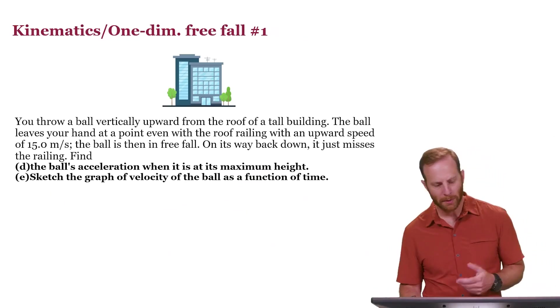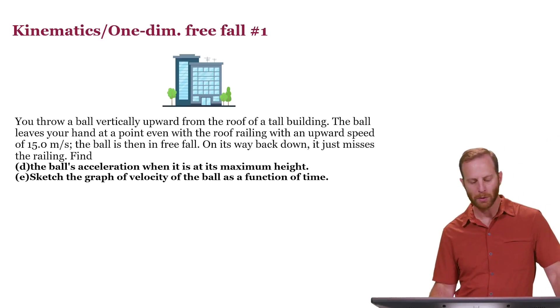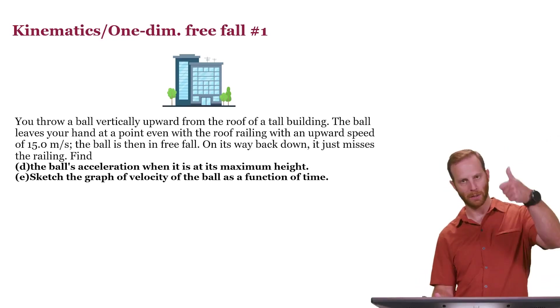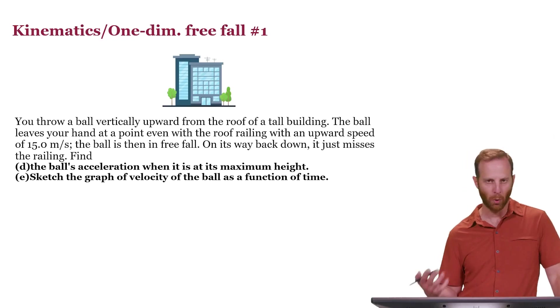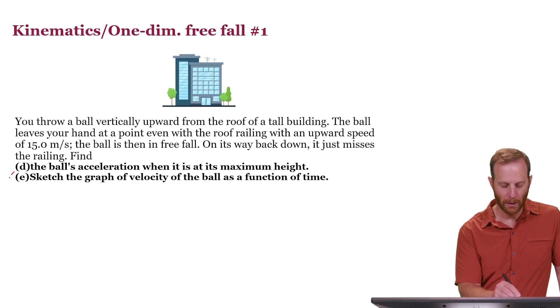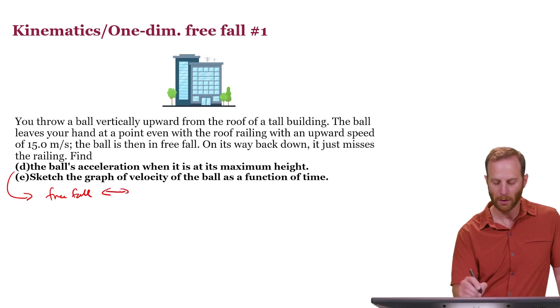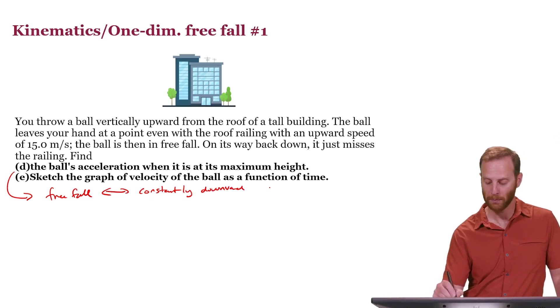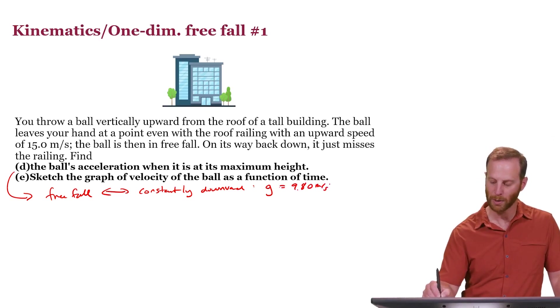So parts D and E, we'll talk about them together. Part D, what is the ball's acceleration when it's at its maximum height, which is to say when it's at the top of its motion. At that point, what we just described was that the velocity will be zero. But you have to keep in mind that whenever you have free fall, which we certainly do in this situation, free fall means that the acceleration is constant, constantly downward, with a magnitude of g. So downward with a value of 9.80 meters per second squared.